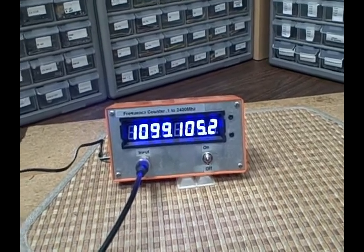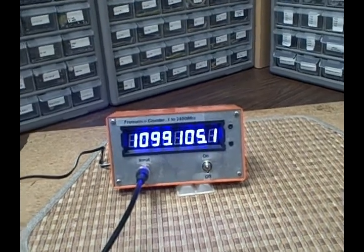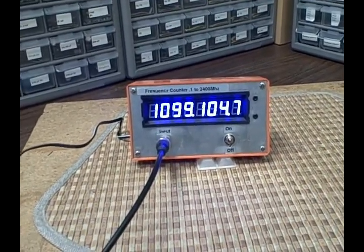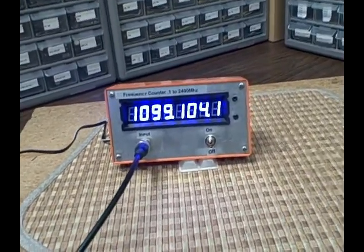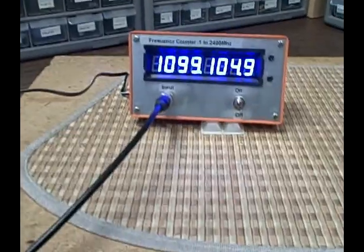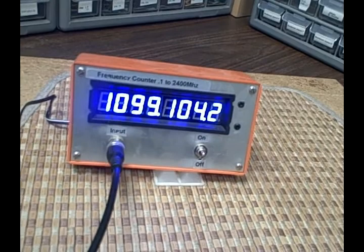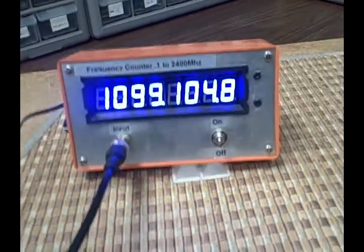So we're running one zero ninety nine, so it's probably fairly accurate at that range. Very bright, very easy to read, large digits. I am using a wall wart again here, this one is a 12 volt DC wall wart, so I'm feeding 12 volts into the back of this thing.